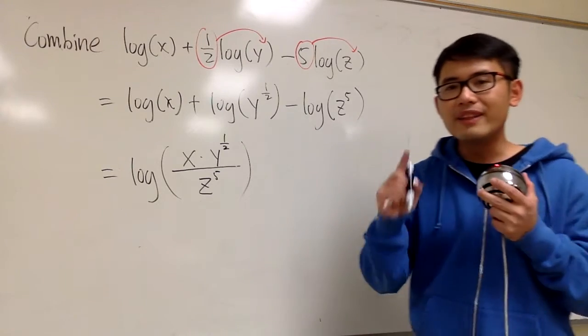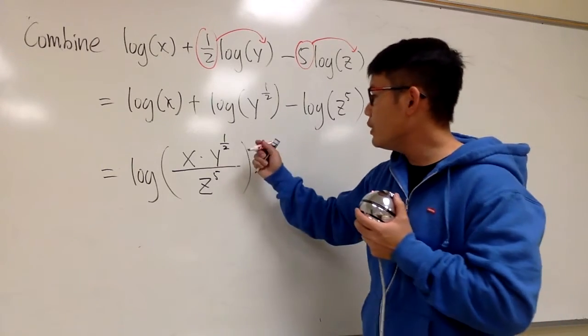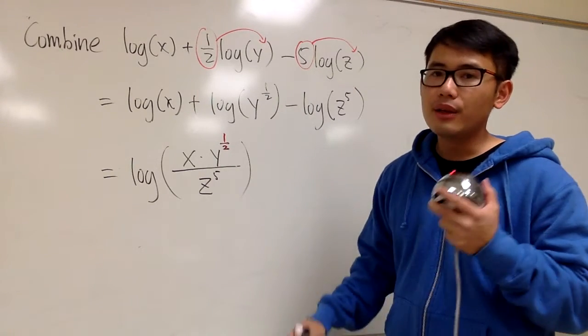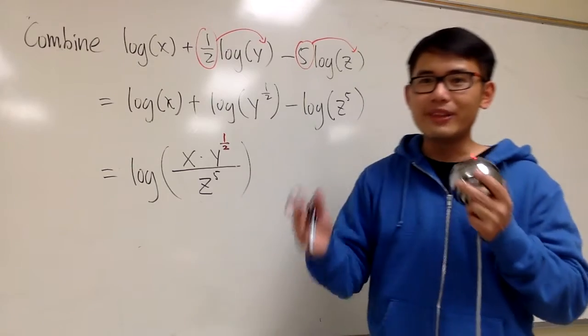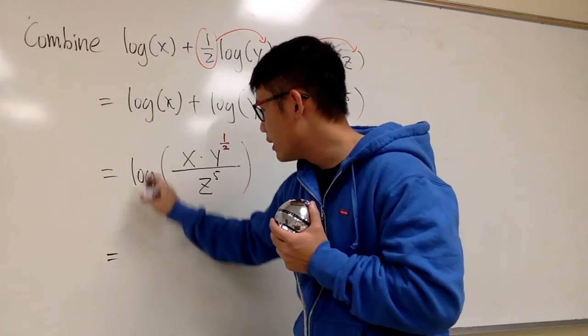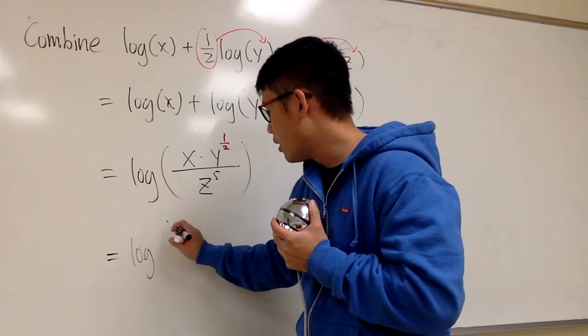So this is pretty much it. The final step is that we have the 1/2 power for the y. And as usual, we will change the 1/2 power into the square root.